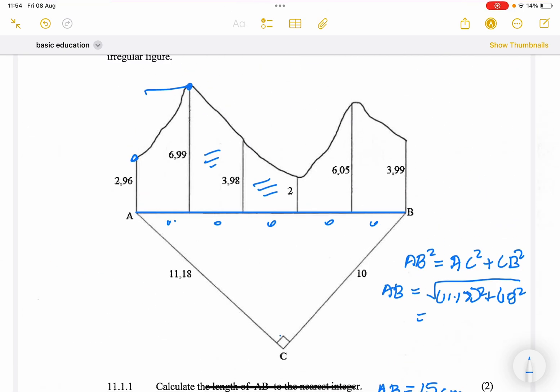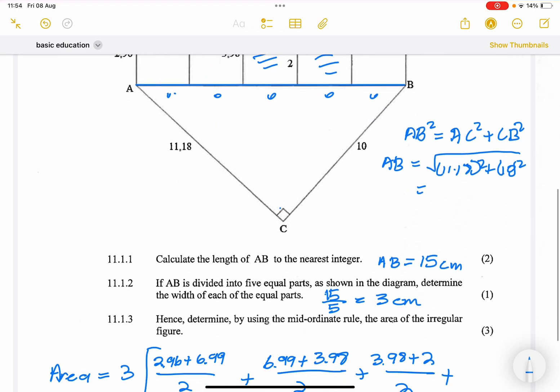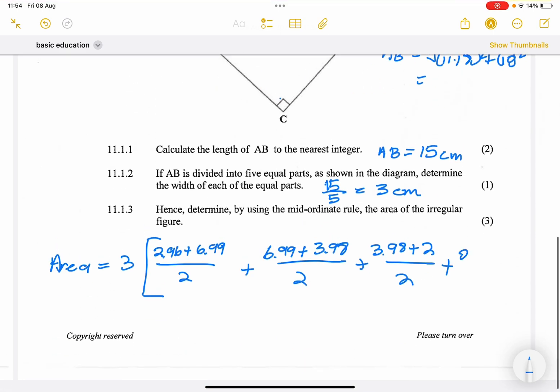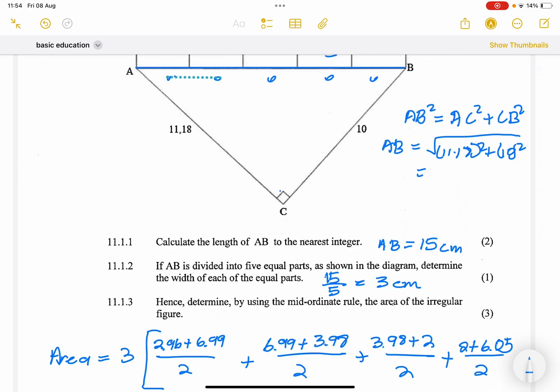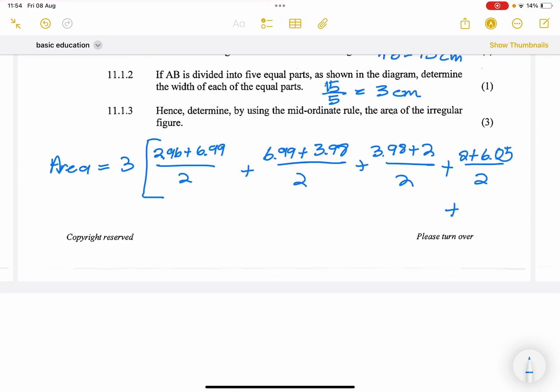The next one, 2 plus 6.05 over 2, and finally, the last one, 6.05 plus 3.99 over 2. Now, you would work out this area.